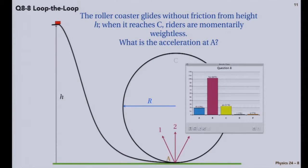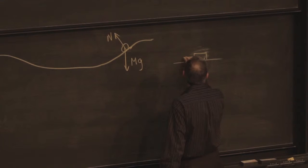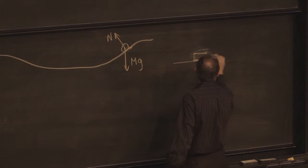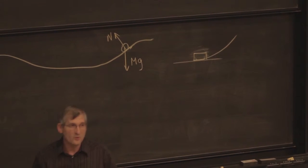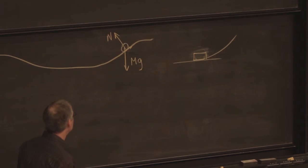So most people say straight up. What are the forces on the mass when it's down here? It's not a round thing, it's a little sliding thing. It's just entering a curved portion. So what forces are on it?